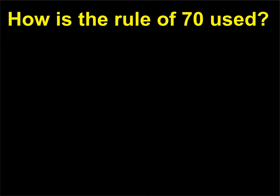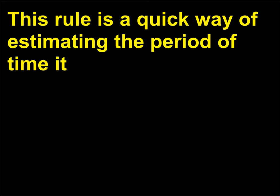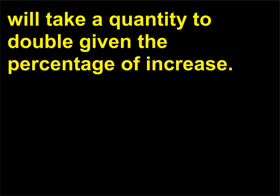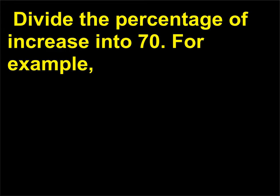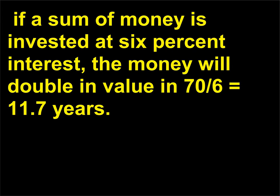How is the rule of 70 used? This rule is a quick way of estimating the period of time it will take a quantity to double, given the percentage of increase. Divide the percentage of increase into 70. For example, if a sum of money is invested at 6% interest, the money will double in value in 70 divided by 6, equals 11.7 years.